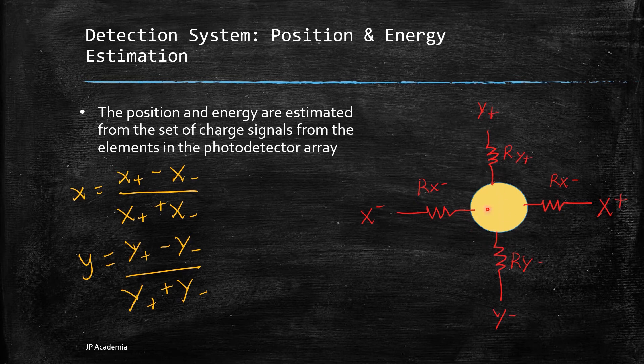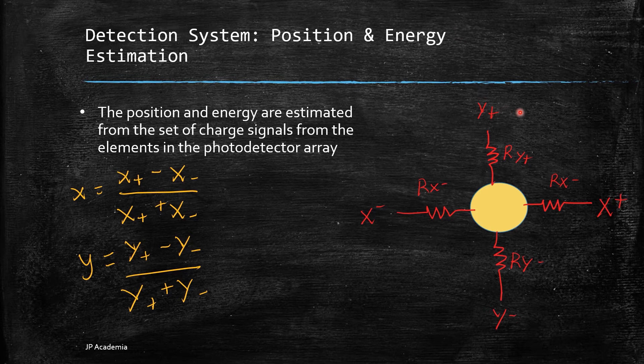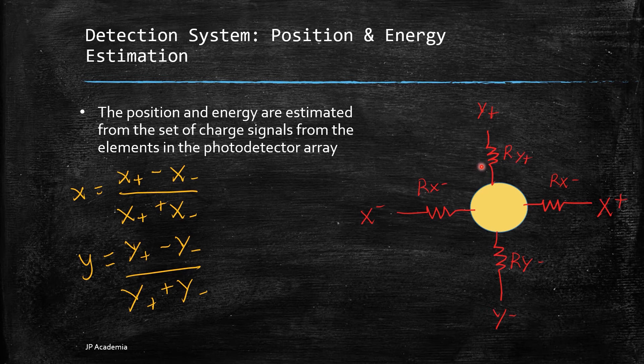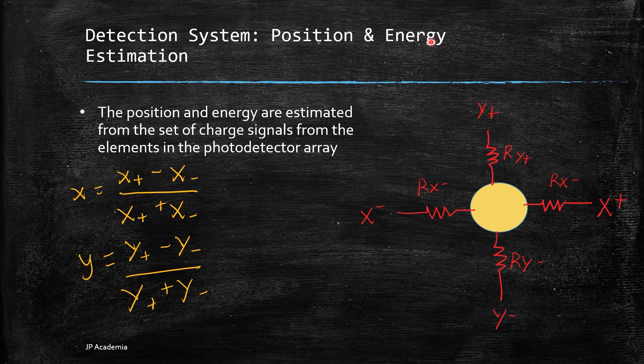Then we have four outputs. The output from each PMT or pre-amplifier is divided by a resistive network with four outputs. We have X plus with a resistor, X minus another resistor, Y plus with another resistor in between, and Y minus with another resistor. Thus, we can determine the position using the signals on these four output lines.